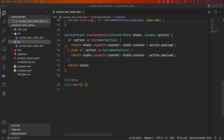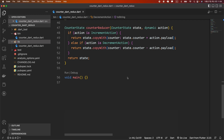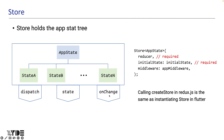Once again, since reducers are pure functions, they should not execute side effects such as logging or HTTP calls. Next, create a store. The store acts as a repository that holds the app state tree. The only way to change a store's state tree is to dispatch an action. Dispatched actions are sent to the reducer to update the state tree. When using Redux in React, we use the createStore function, but in Flutter Redux we create a Store instance. To create a store instance, a reducer and initial state must be provided, where initial state is a named argument. Another important argument is the middleware named argument, which we will look at later.